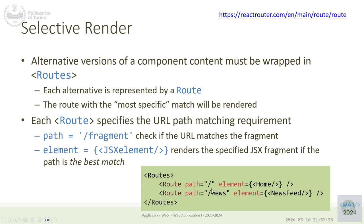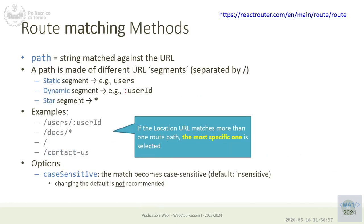For example, a path of 'home' renders the Home component and a path of 'new' renders the NewsFeed component. The whole routes block will render either Home, NewsFeed, or nothing at all if the URL doesn't match either string. It will never render more than one route — nothing is rendered, or one of the route elements is rendered according to the matching rules.